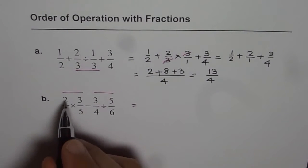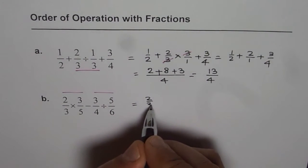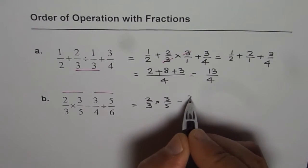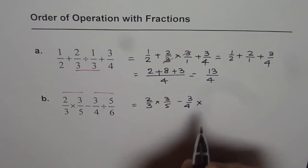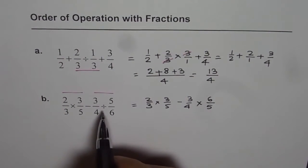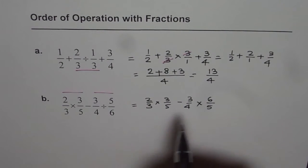So what we can do is, we can write this as two over three times three over five, take away three over four times... So I am writing division as multiplication. We get six over five. Whenever you want to convert division to multiplication, you need to multiply by its reciprocal. So it becomes six over five.